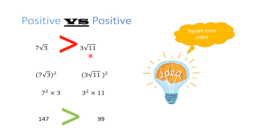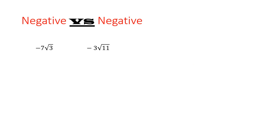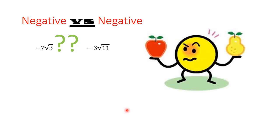Our third and last case is negative with negative. I have kept the same numbers but added a negative sign, so we have negative 7√3 and negative 3√11. We need to know which one is greater and which one is smaller. Just as before, we can't compare them directly, so we square both sides.